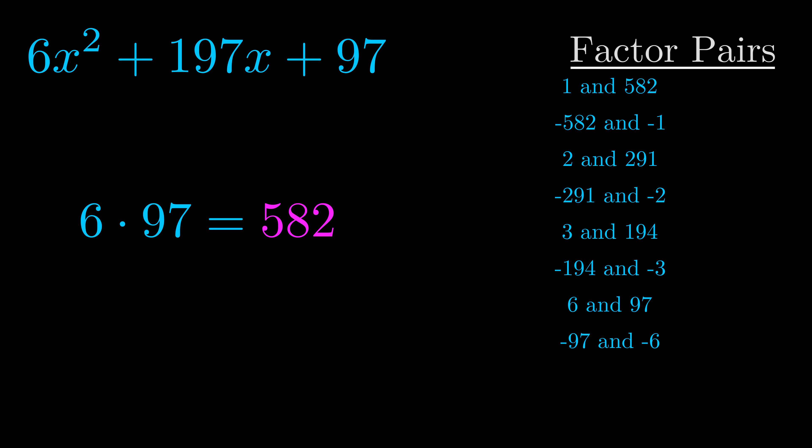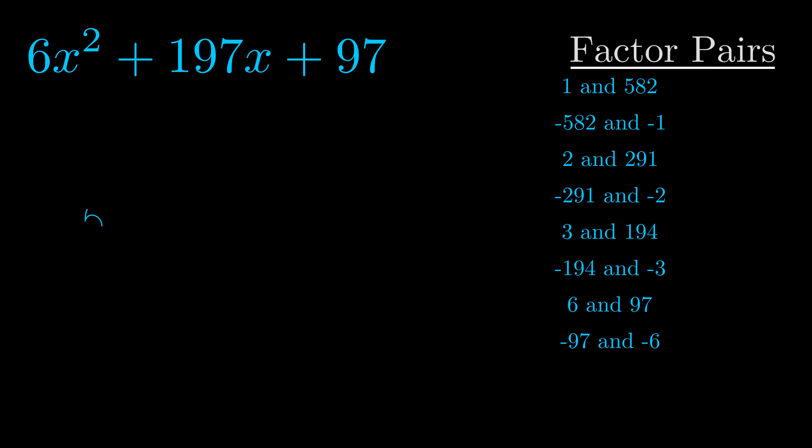Now once you have these factor pairs the goal is to find which of these pairs adds to the b value. The b value is the coefficient on the x term. That's the middle term, the one that we haven't done anything with yet. And really this is the only factor pair that we need.